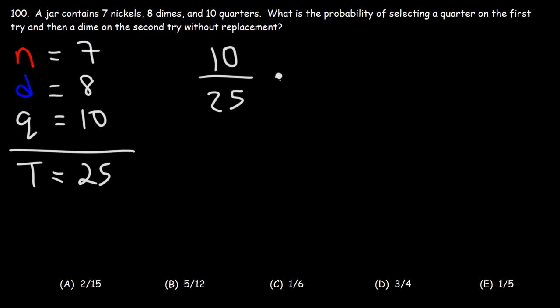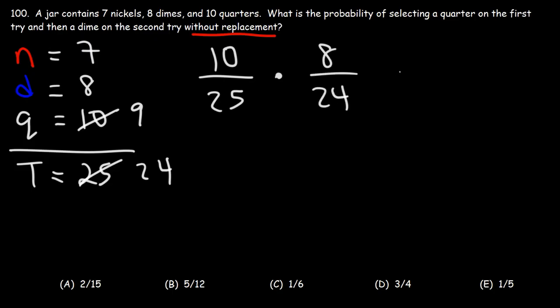Now let's focus on the second event: what's the probability of selecting a dime on the second try? Notice the expression 'without replacement.' This means that on the first try, once we take out that quarter, we're not going to put it back in. So in the second try, there are 9 quarters remaining, which means there's a total of 24 coins. So we have 8 dimes out of 24 coins.